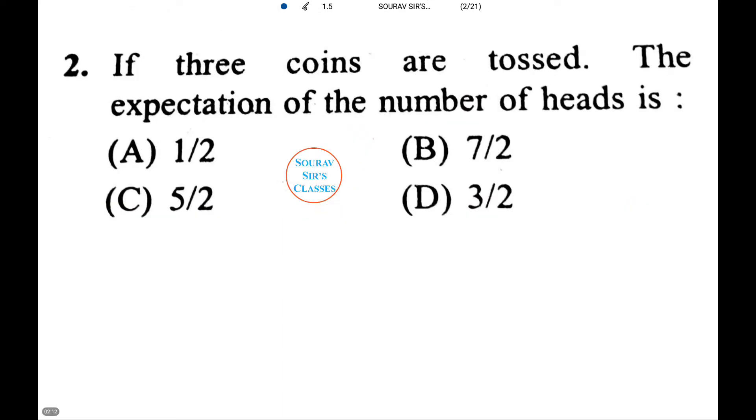Now in the next question if 3 coins are tossed, the expectation of the number of heads is among the following. Let X denote the number of heads obtained on a throw of the 3 coins. Then X is the random variable with the following probability distribution.